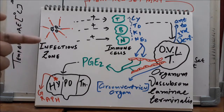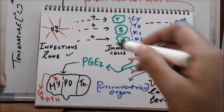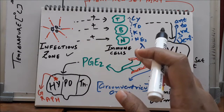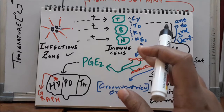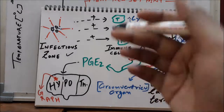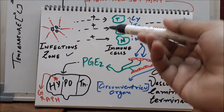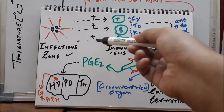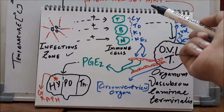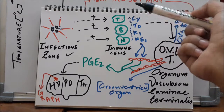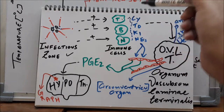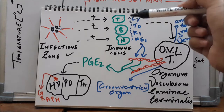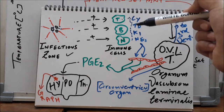Starting from the infectious zone — the epicenter of all chemical and chemotaxis activity — a virus or bacteria infests the tissue. This stimulates T cells, B cells, and other immune cells to mount an immune reaction. These immune cells then secrete cytokines, which are chemicals released by immune cells that help drive immunity.